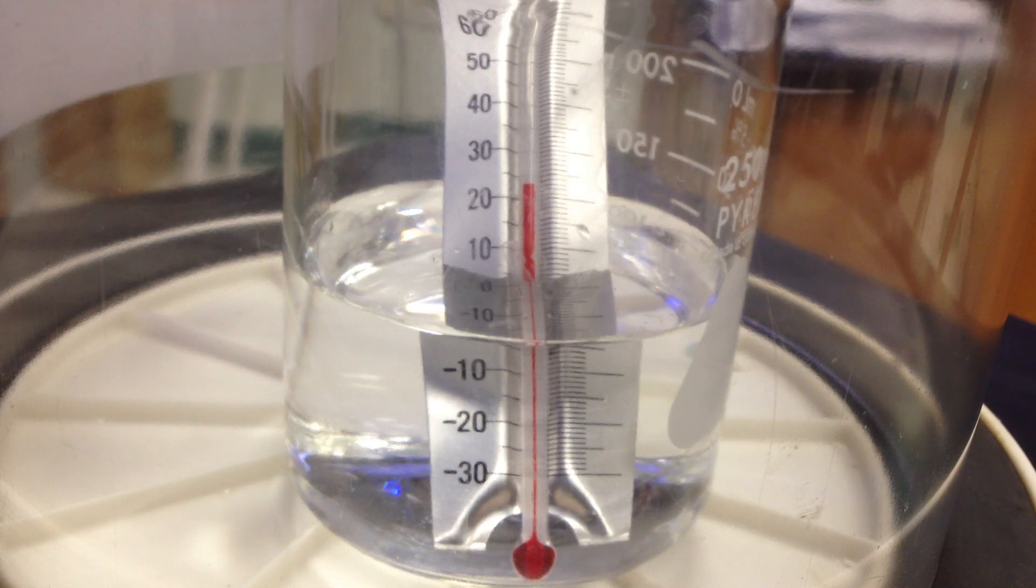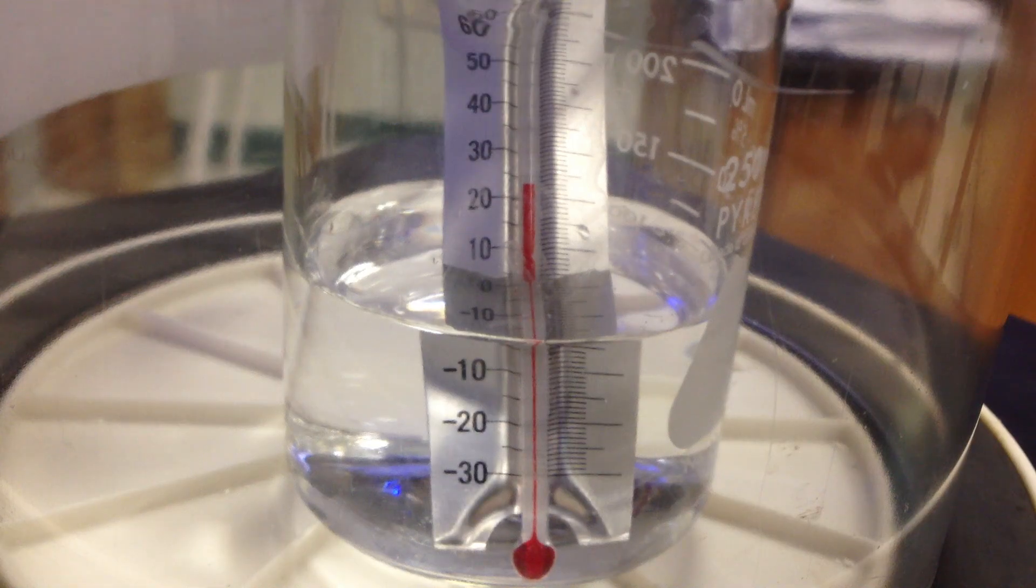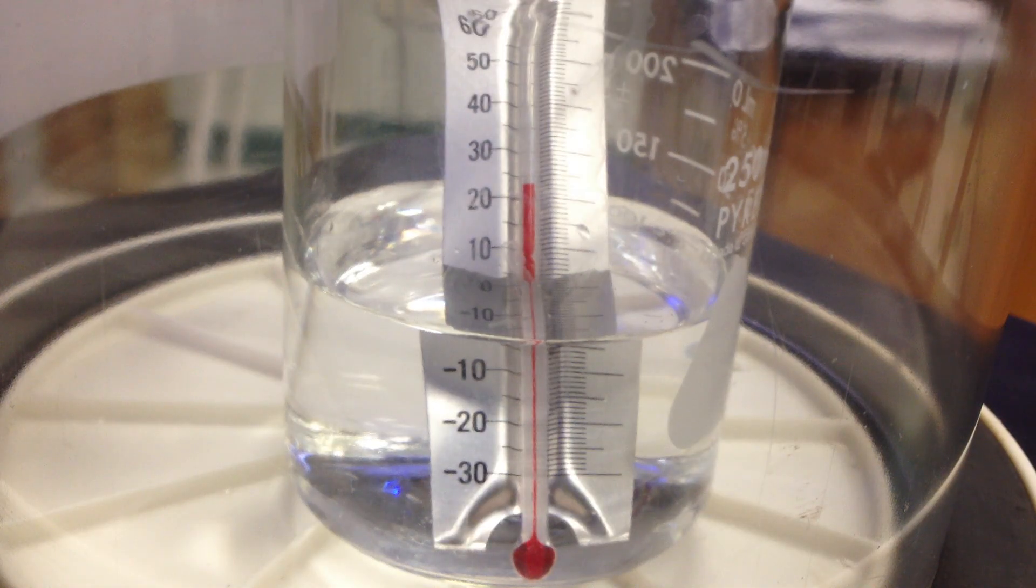You can read the thermometer is about 23 or so. Hard to read through the glass chamber, but it's about 23. And we're going to try to boil this water at room temperature, about 23 degrees Celsius, by lowering the atmospheric pressure.